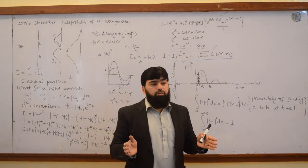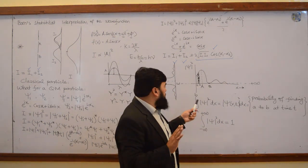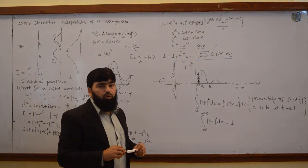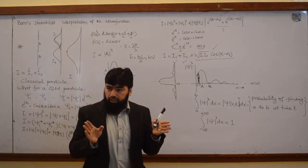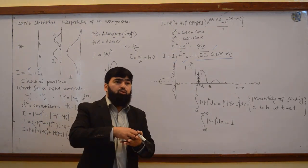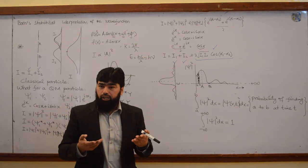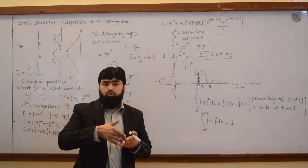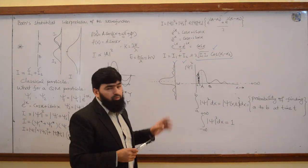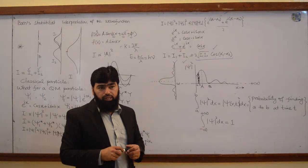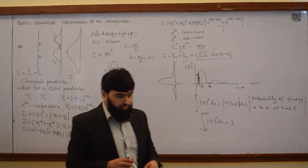The wave function itself is not having any probability. The mod square of it is the probability density, leaving only the amplitude. Whatever measurement you do on it, it is dynamical in nature. You will have to do measurement on this one in order to get some information about the state of the particle. And with this, thank you.